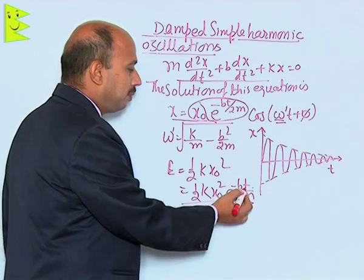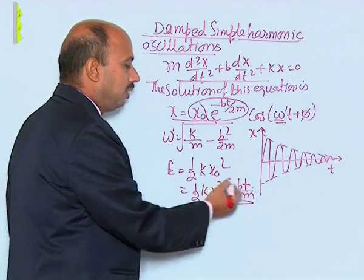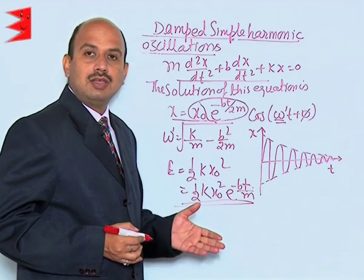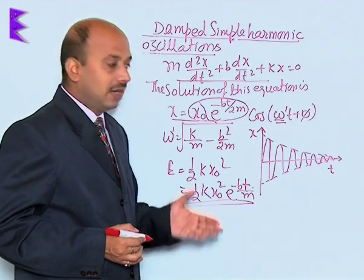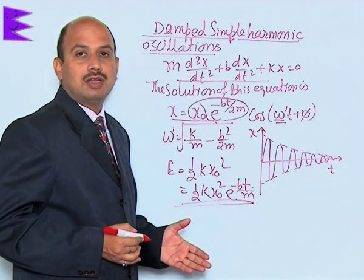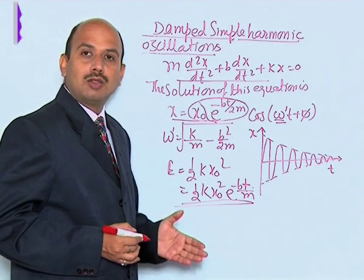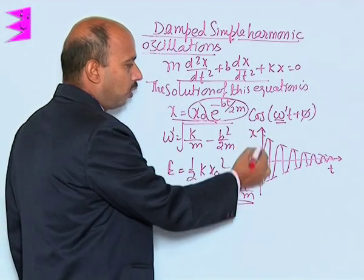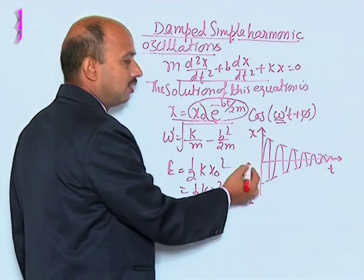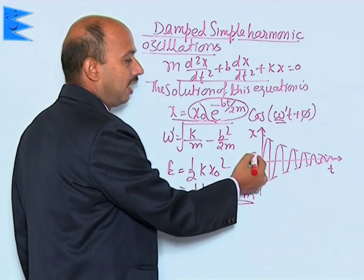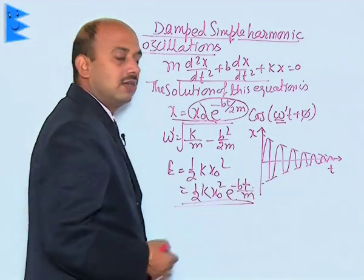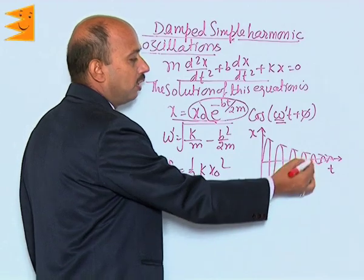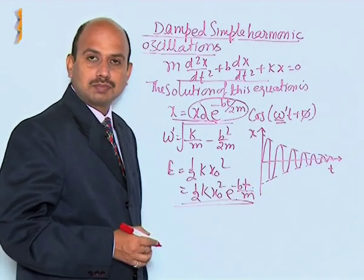As time increases, the total energy decreases and ultimately reduces to zero, at which point the oscillation stops. The graph of displacement x versus time t shows a large initial amplitude which keeps on decreasing with time.